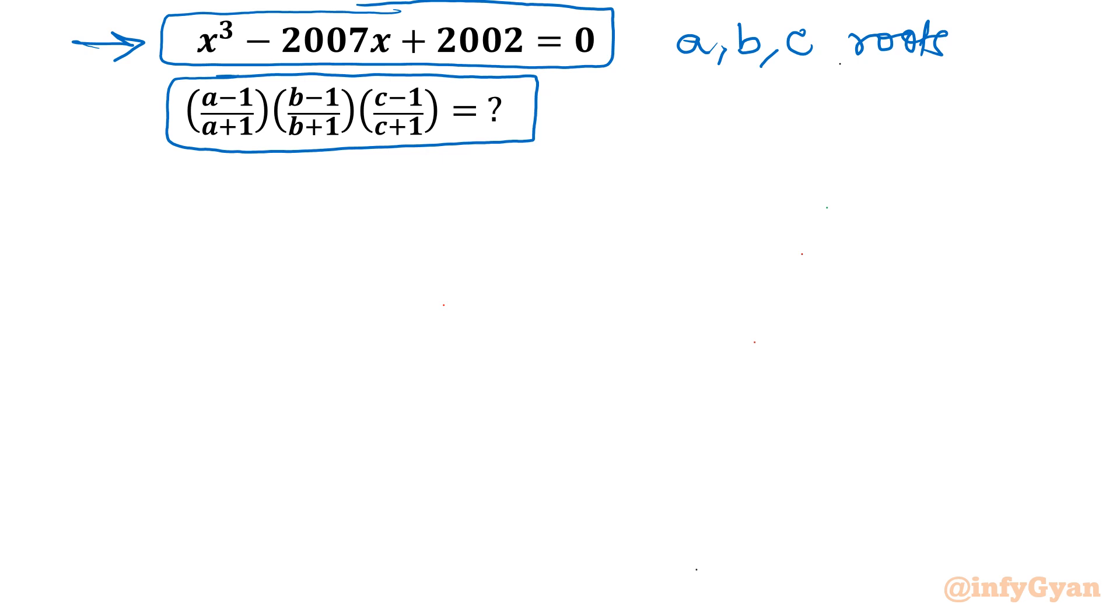So let's get started by writing what is Vieta's method. This is very useful in terms of polynomials and its roots. Let me write one general cubic polynomial ax³ + bx² + cx + d = 0. And let us presume alpha, beta, gamma are the three roots of this cubic equation.